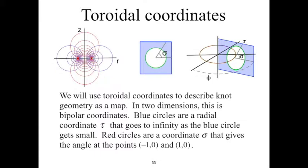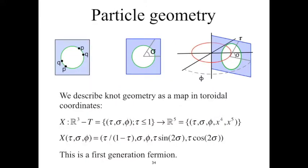We now make this description more precise using a mapping. The surgical procedure to make R³ # S¹ × P² is to remove a torus and then attach points to the points that are diametrically opposite to them. We therefore construct a map from R³ minus the torus into R⁵, and the end result will be a continuous three-dimensional manifold embedded in a five-dimensional space. We describe R³ using toroidal coordinates τ, σ, and φ, and we subtract the torus from R³ by taking the set of τ, σ, φ such that τ is less than or equal to 1. The set of points where τ ≤ 1 are the points indicated in green and blue for that particular slice at angle φ.